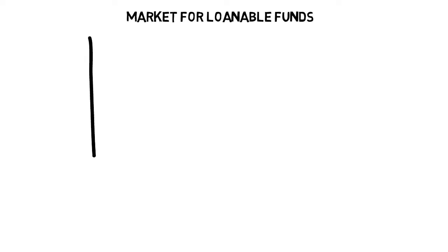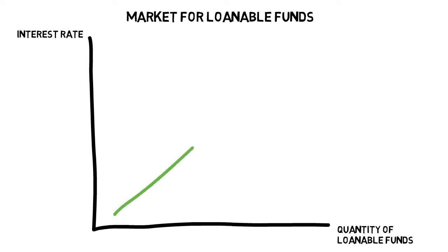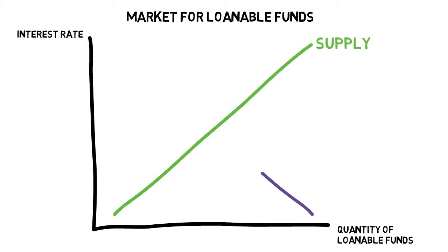Here we're going to look at a formal diagram analysis of the market for loanable funds. On the y-axis we have the interest rate and on the x-axis we have the quantity of loanable funds. Looking at the supply curve, as the interest rate increases the quantity of loanable funds available for supply increases as well — so a positive relationship.